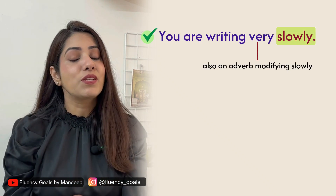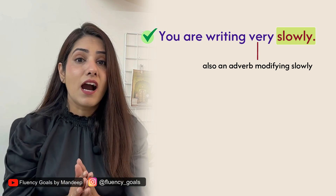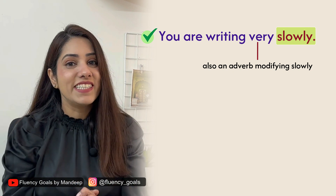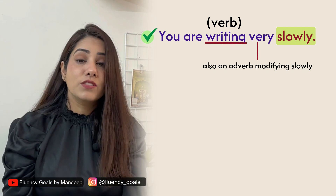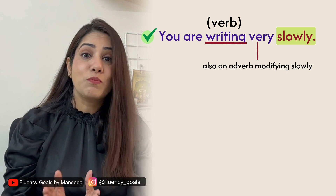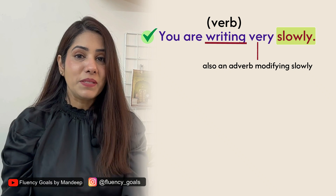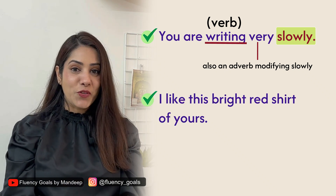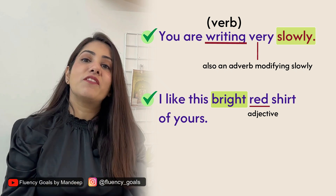Look at this first example: 'You are writing very slowly.' Here 'slowly' is an adverb telling you how the action of writing is being done. So you are writing — how? Slowly. So 'slowly' is an adverb modifying the verb.